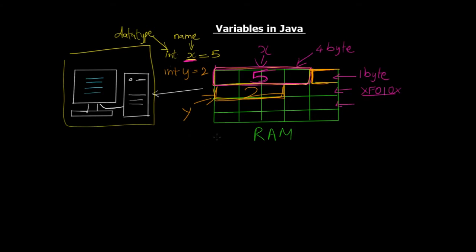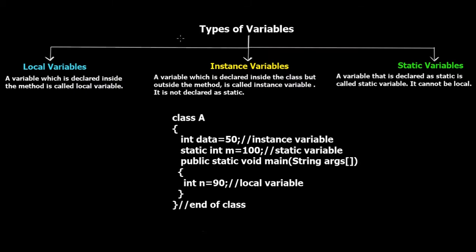That was the theoretical aspect of what variables are. We create variables to hold values — for example, if you want to create a calculator program taking two input values from users, you need to store those values, so you create two variables to hold them. Depending on where the variable is created in a program, variables can be categorized into three types: local variable, instance variable, and static variable.